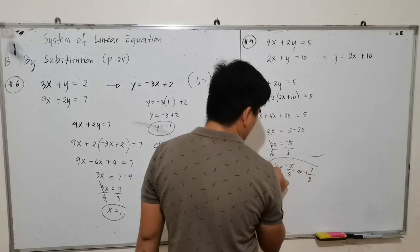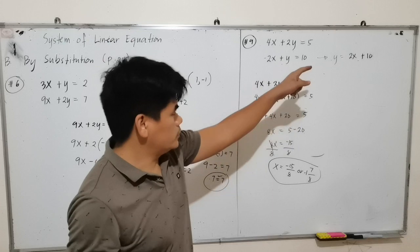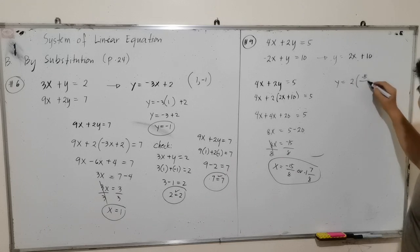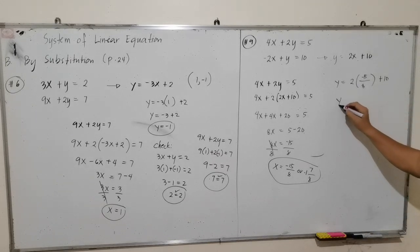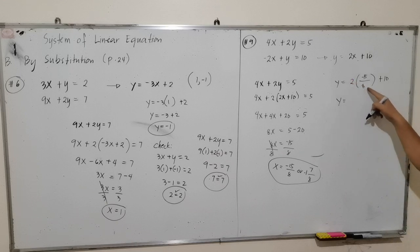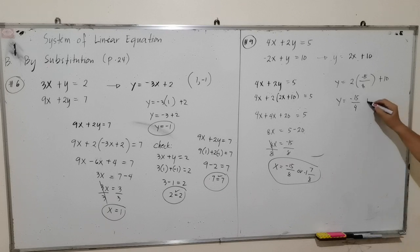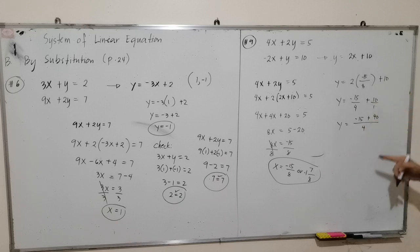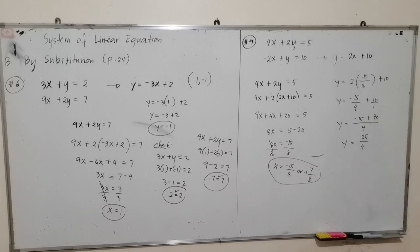Now substitute x equals negative 15 over 8 into y equals 2x plus 10. So y equals 2 times negative 15 over 8 plus 10. Simplifying: 2 and 8 cancel to give negative 15 over 4. Using LCD of 4: negative 15 over 4 plus 40 over 4 equals 25 over 4. So y equals 25 over 4.